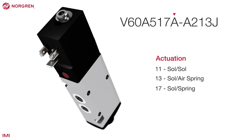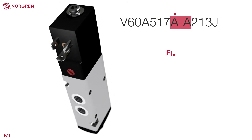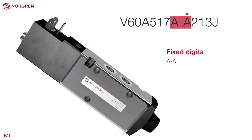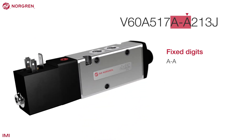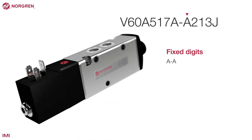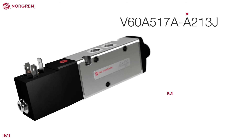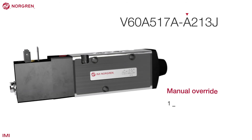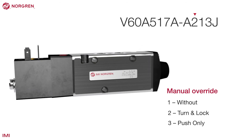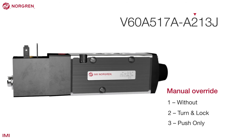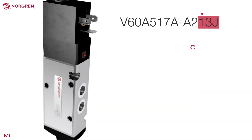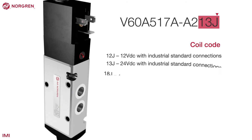The dash or hyphen is always between digits 8 and 9 and is fixed. The following digits are usually the most relevant when it comes to bespoke options. Digit 10 tells us the manual override option. Digits 11, 12 and 13 relate to the coil code from a table.